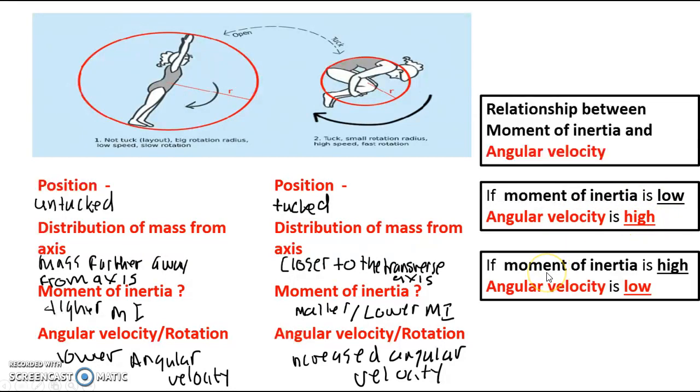Flip side to that, if the moment of inertia is high, e.g. there's a high resistance to rotation, that means directly that angular velocity is going to be low. So that's that sorted.